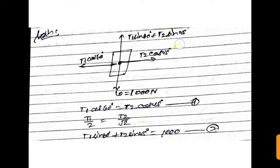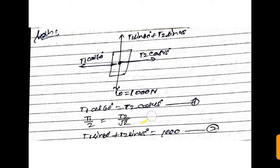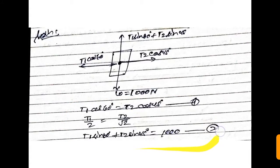The horizontal components T2·cos45° and T1·cos60° are equal and opposite, giving us: T1·cos60° = T2·cos45°, which simplifies to T1/2 = T2/√2 (equation 1). Substituting T1 from equation 1 into the vertical equation, we can solve for T2 and then T1. These are straightforward questions that may appear in competitive exams.